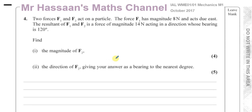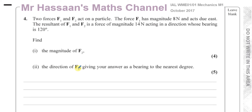It says the two forces F1 and F2 act on a particle. The force F1 has a magnitude of 8 newtons and acts due east. The resultant of F1 and F2 is a force of magnitude 14 newtons acting in a direction whose bearing is 120 degrees. We have to find the magnitude of F2 and the direction of F2, giving our answer as a bearing to the nearest degree.